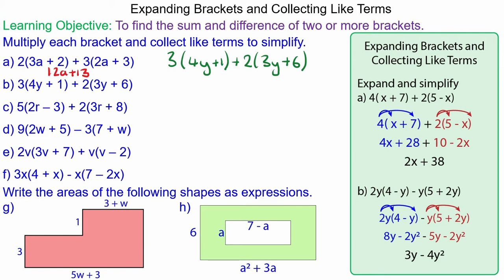For question b we multiply the 3 by the 4y to make 12y, the 3 by the 1 to make 3, and we add this to 2 lots of 3y which is 6y, and 2 lots of 6 which is 12. And collect the like terms. 12y add 6y is 18y, and 3 add the 12 makes 15.